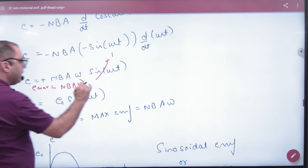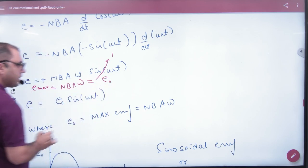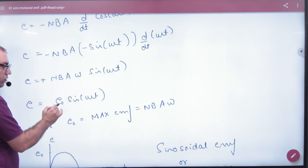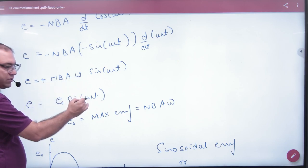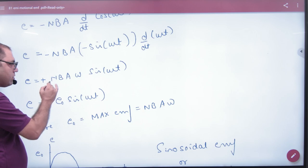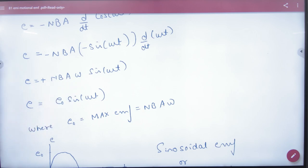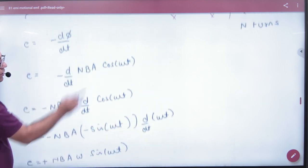EMF. Maximum EMF ko e max ya e nought likha jata hai. To yaha par kya ho ga? Is ki jagah e nought put kar lenge. To e is e nought sin omega t. Where e nought is equal to NBA omega. Aap please apne formula booklet me note karna formula.